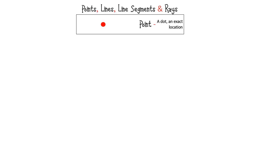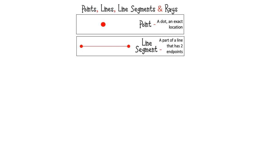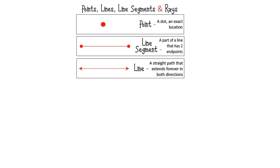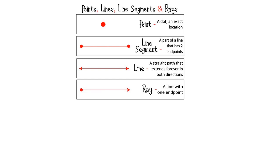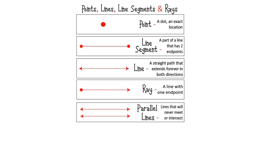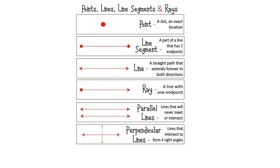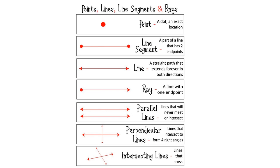Let's revise all the concepts we have learnt. First, a point — a tiny dot which shows the exact location. After that, a line segment — a part of a line with two end points. Then, a line — a straight path that extends forever in both directions. Then, a ray — a line with only one end point. Then, parallel lines — lines that will never meet or intersect. Then, perpendicular lines — lines that intersect to form four right angles. And finally, intersecting lines — lines which cross each other.